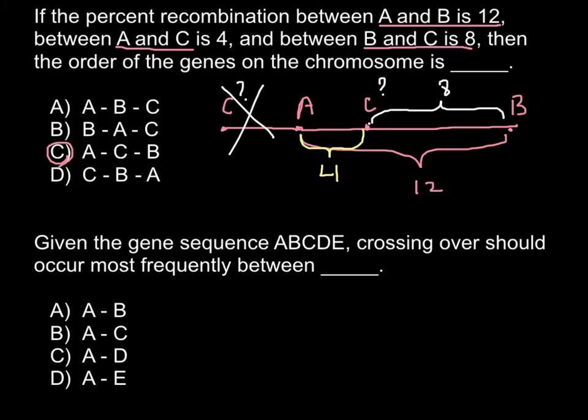And second question. Given the gene sequence A, B, C, D, E, crossing over should occur most frequently between... And this is also very easy to find.